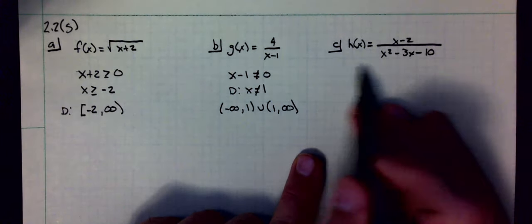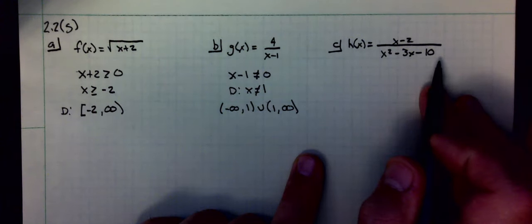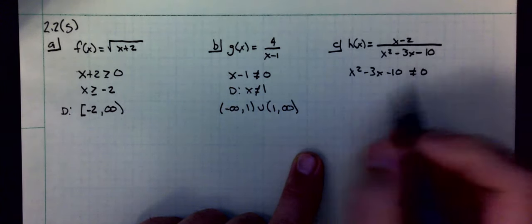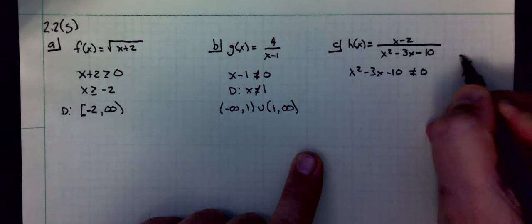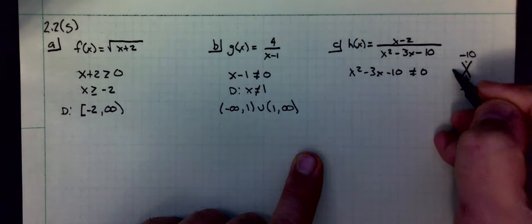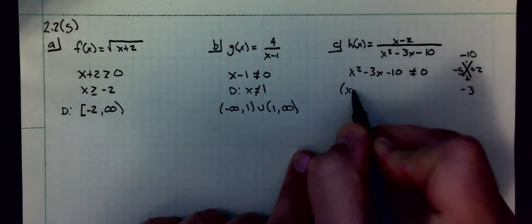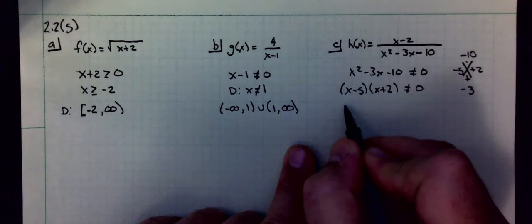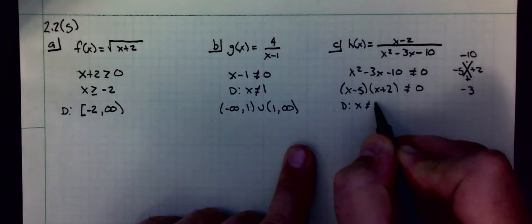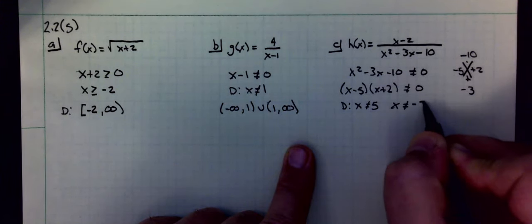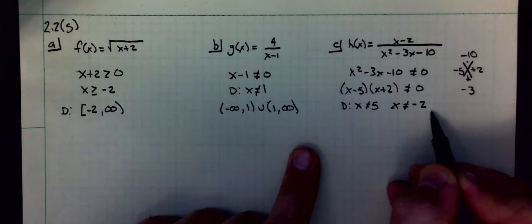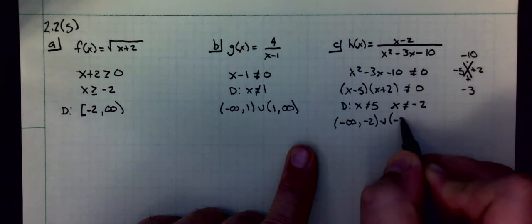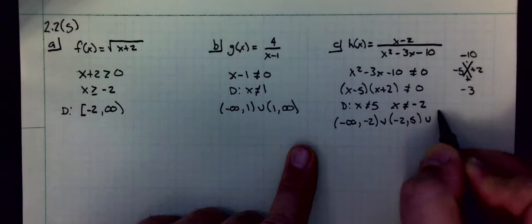For problem C, again, for the domain, I just care about the denominator. I want to know when x squared minus three x is not equal to zero. First thing I'm going to do is factor this. Two numbers that multiply to negative 10, add to negative three: negative five and a positive two. I have x minus five, x plus two, equal to zero. Set each of these equal to zero, I want x not equal to five, x not equal to negative two. In interval notation, my first vertical asymptote is at negative two, so I'm going to go negative infinity to negative two, union with negative two to five, union with five to infinity.